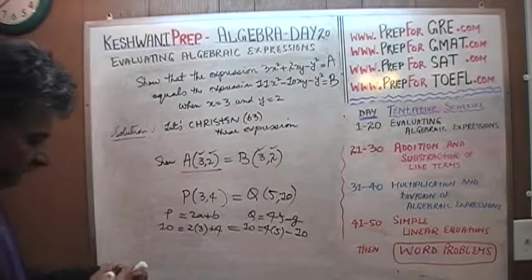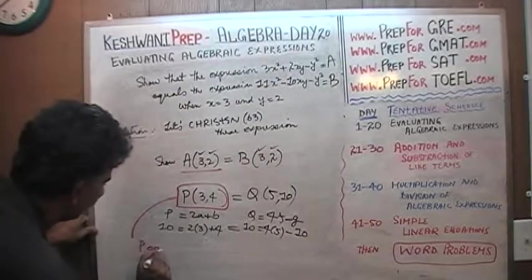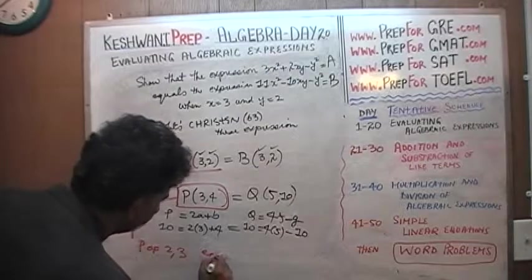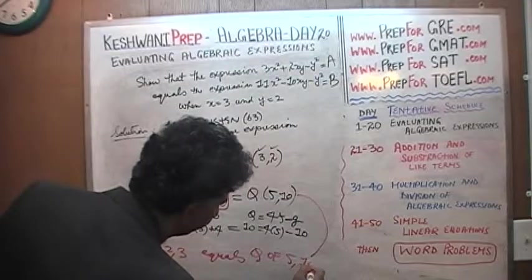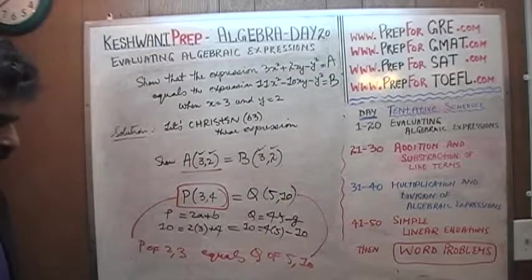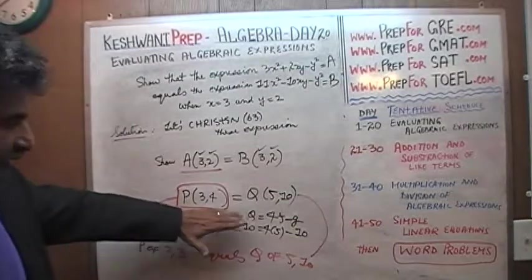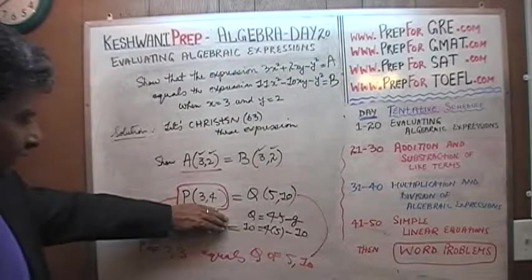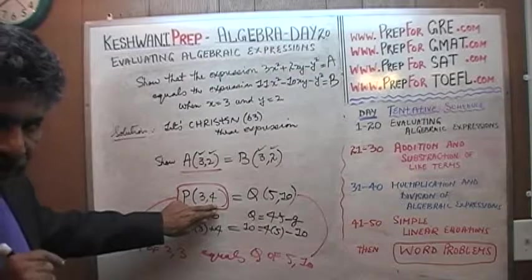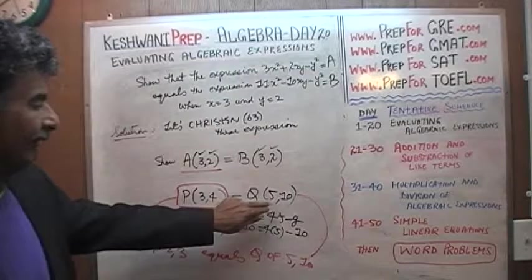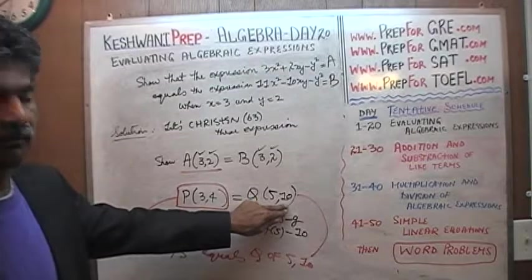This is how it's read one more time: P of 2, 3 equals Q of 5, 10. What that says is the value of expression P when the first variable takes the value of 3 and the second variable takes the value of 4 is the same as the value of expression Q when the first variable takes the value of 5 and the second variable takes the value of 10.